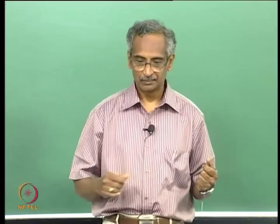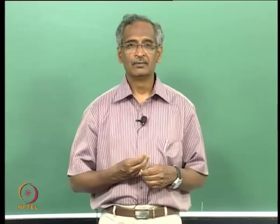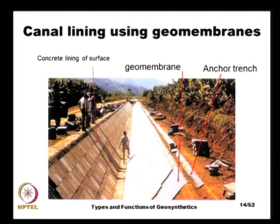Here we see the application of a geomembrane for canal lining, where the geomembrane is lined on the canal and protected by concrete panels on top, so that it is not directly exposed to the sun. All these polymeric products get degraded because of exposure to sunlight and heat. The geomembrane is anchored at the top using an anchor trench.